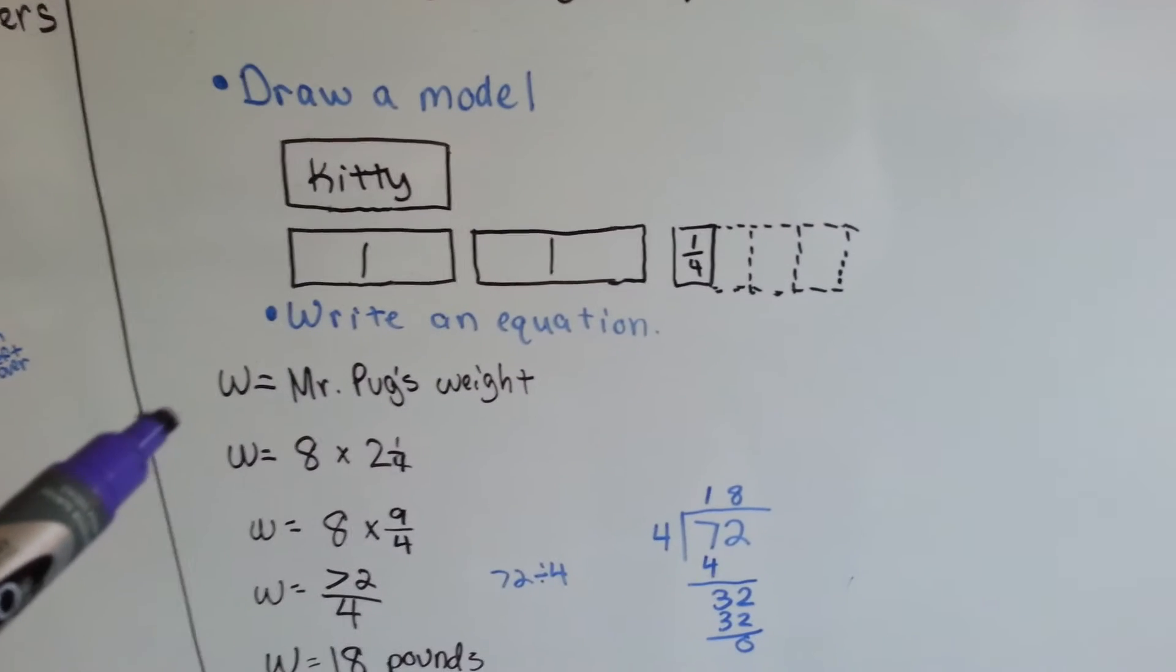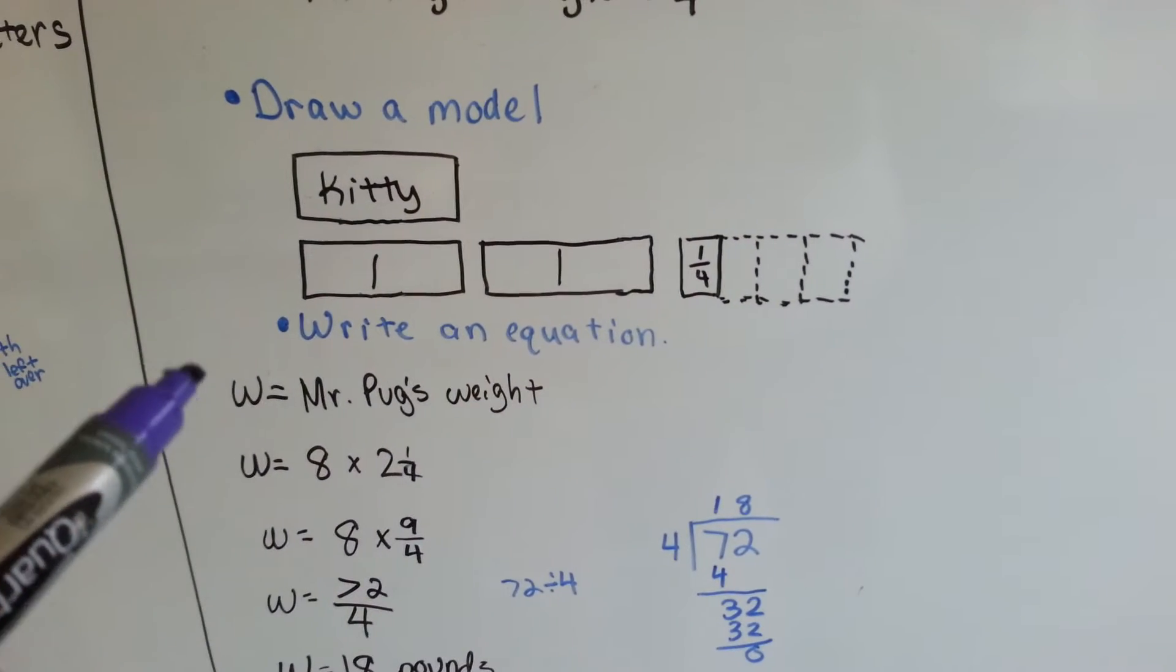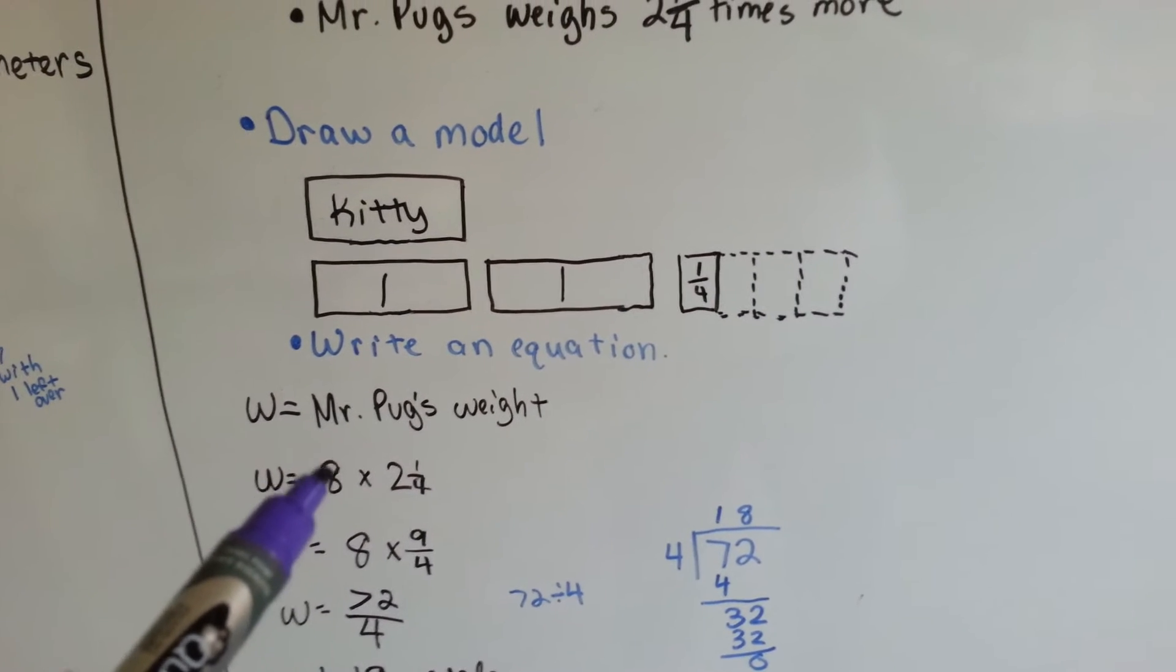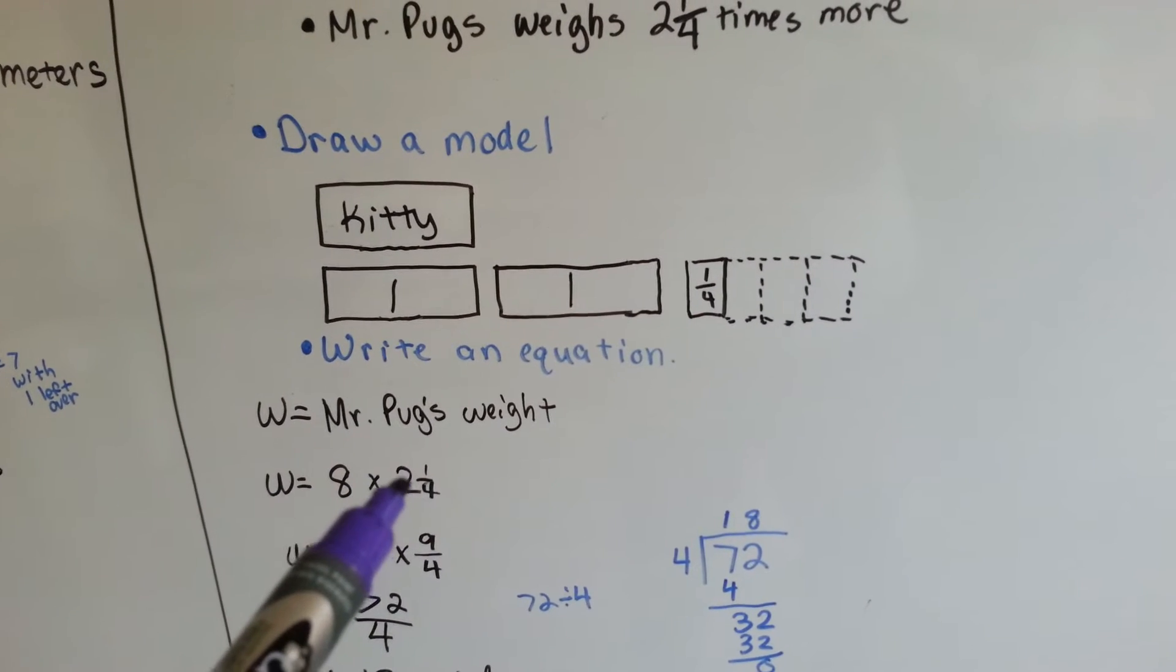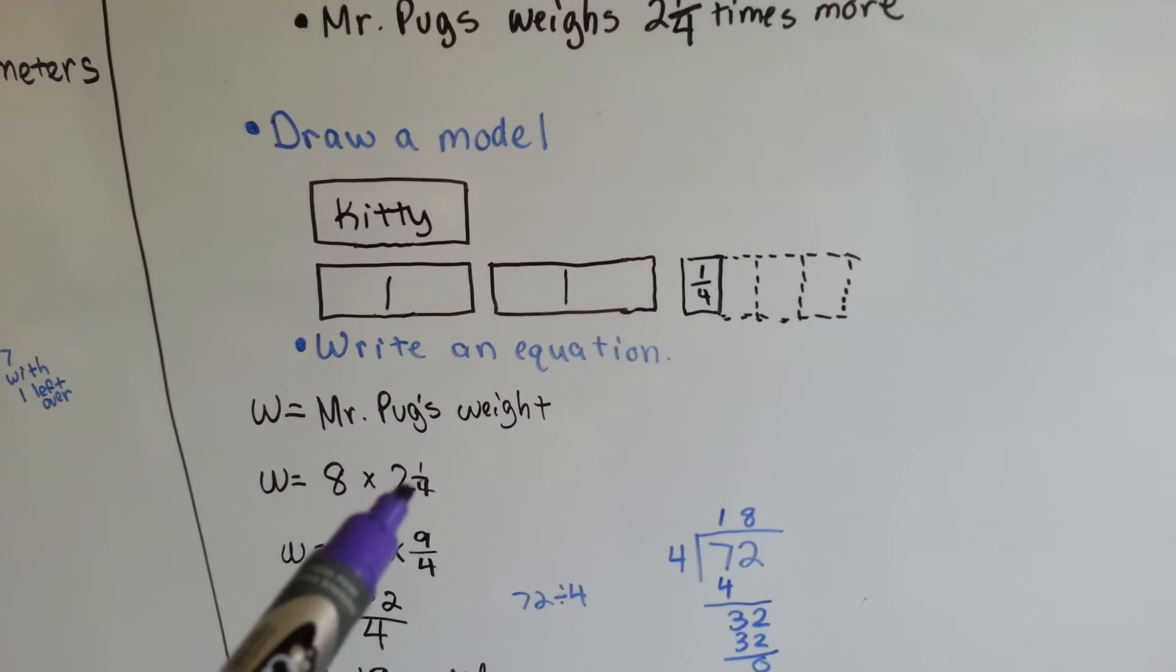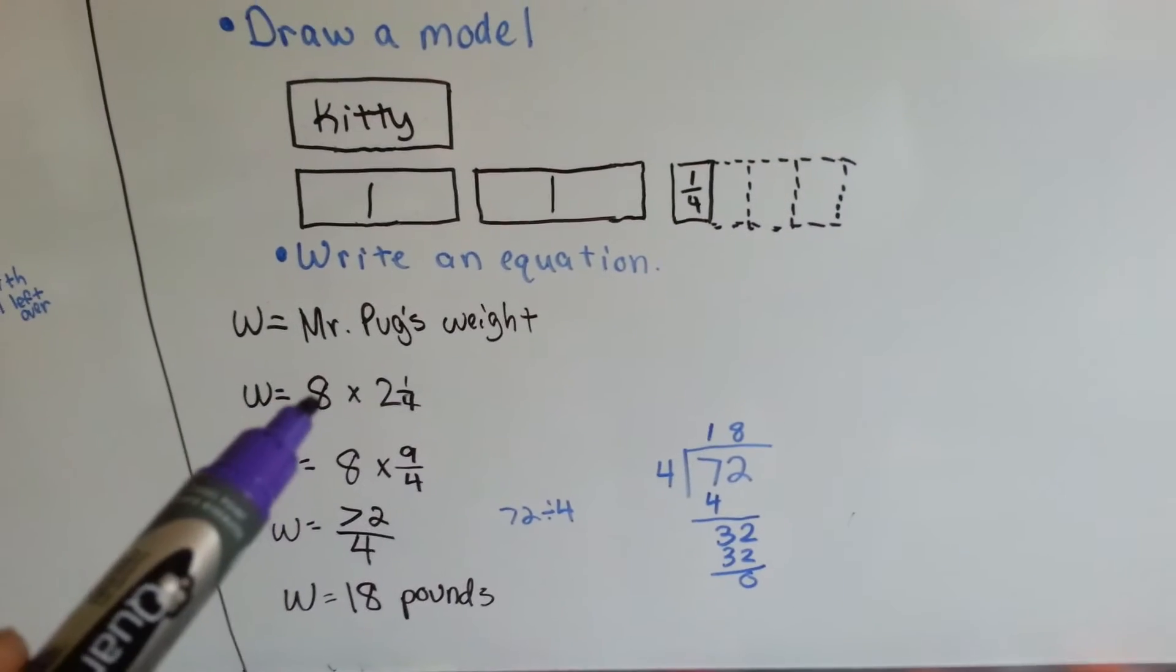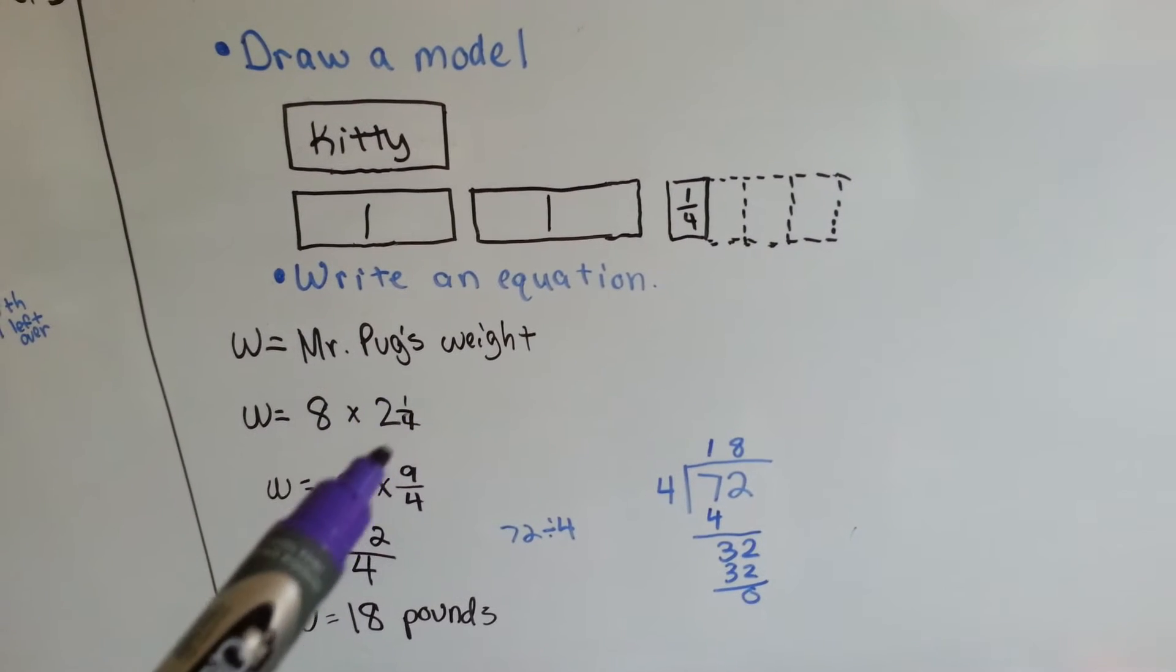We write an equation. W is going to equal the weight of Mr. Pugs. Kitty Puri is eight pounds, and Mr. Pugs is two and a quarter times that, two and a quarter times what Kitty Puri weighs. So we have eight times two and one-fourth.